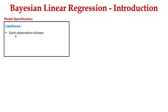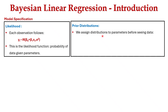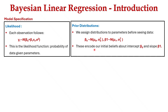For model specification in Bayesian linear regression, the likelihood function is: each observation follows yᵢ ~ N(β₀ + β₁xᵢ, σ²), representing the probability of data given parameters. For the prior distribution, we assign distributions to parameters before seeing the data: β₀ ~ N(μ₀, σ₀²) and β₁ ~ N(μ₁, σ₁²). These encode our initial beliefs about the intercept β₀ and the slope β₁.